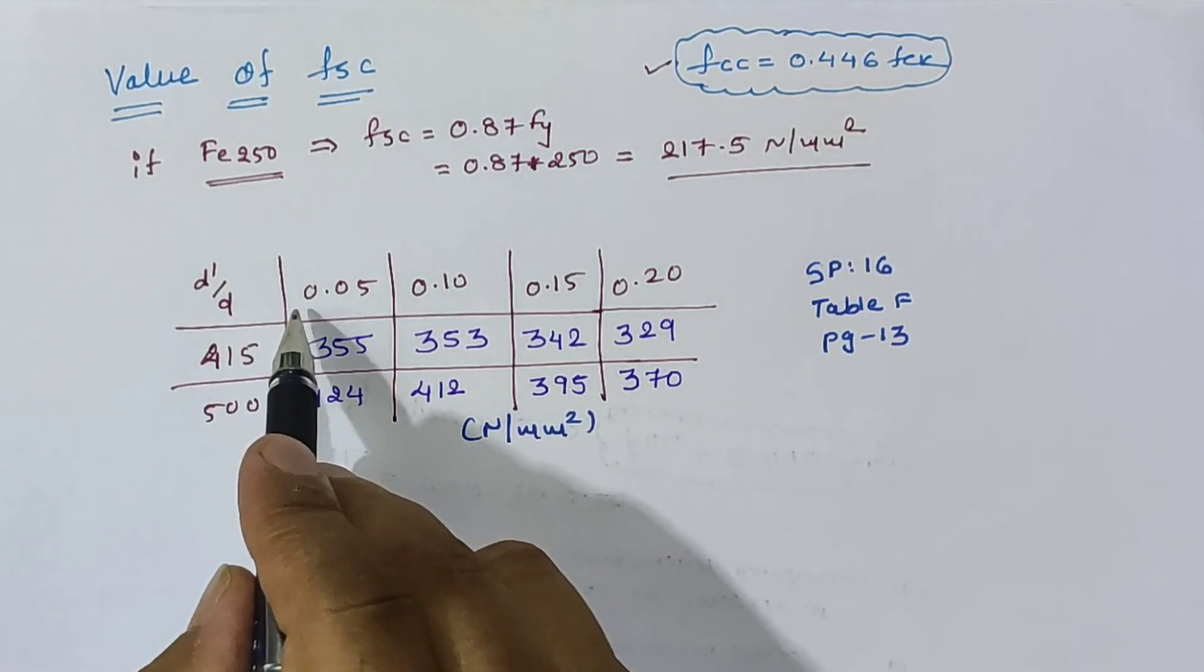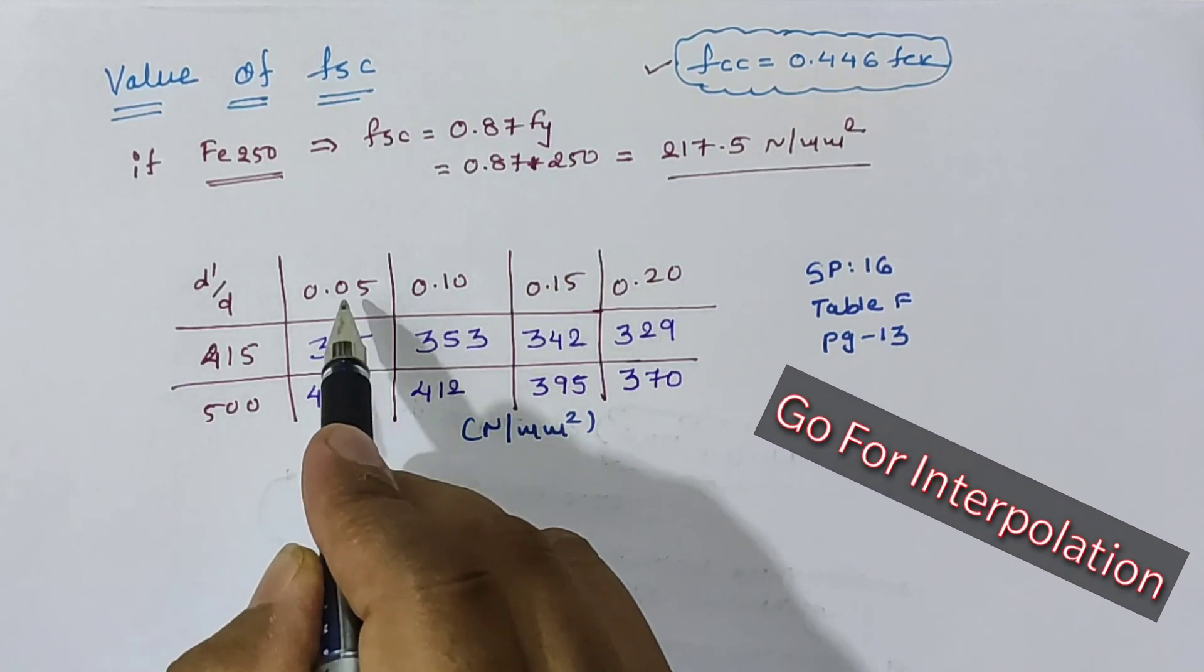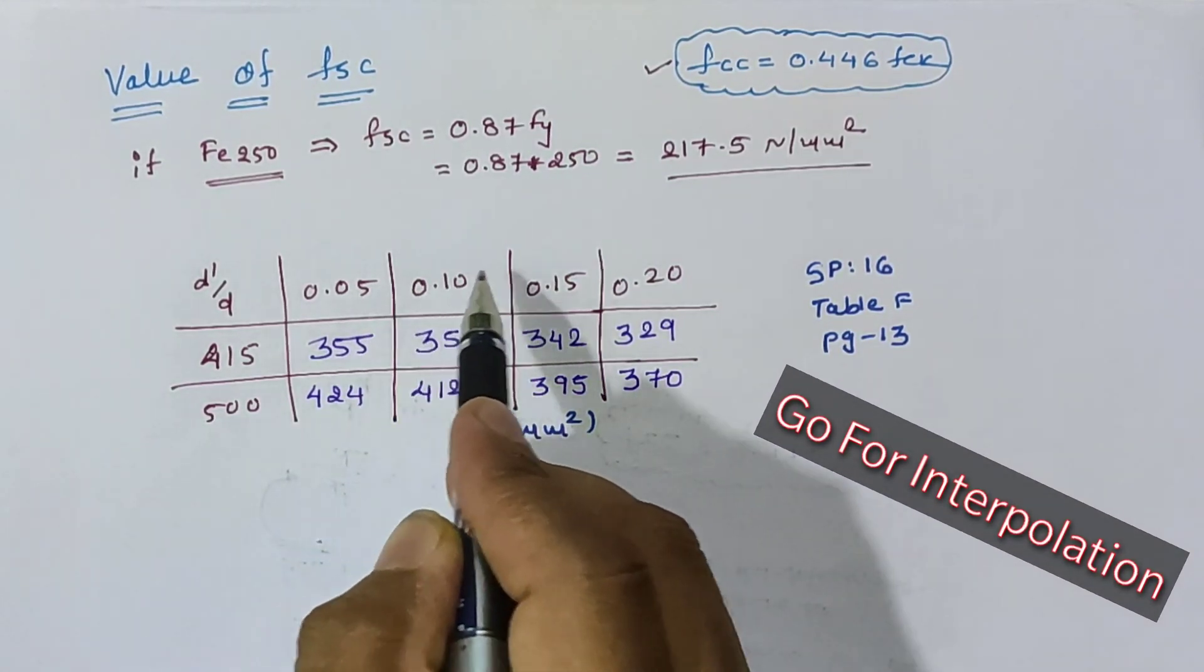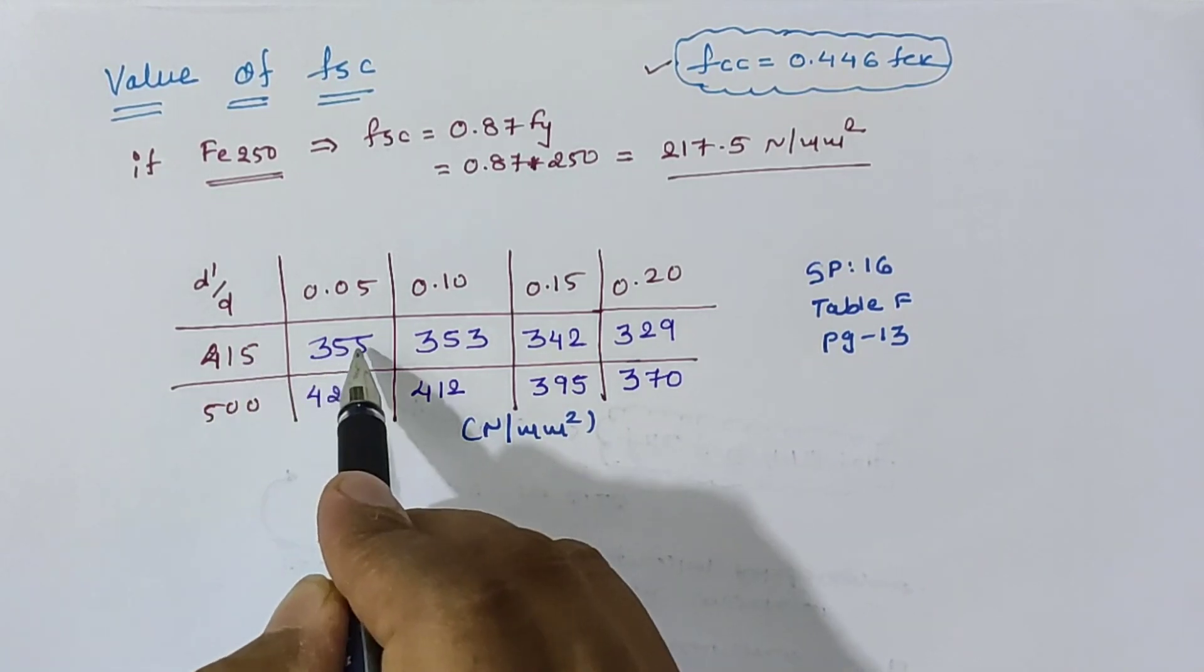If the d' by d ratio is in between any of these ranges, then we have to interpolate between these two values or the ranging values to find out the required value of fsc.